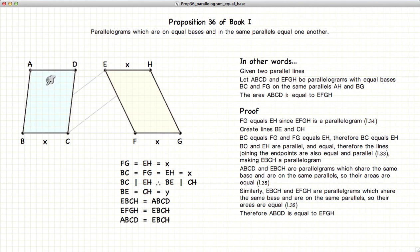So consequently we have ABCD is equal in area to EFGH. So any two parallelograms that have the same base size that are on the same parallels are equal in area.